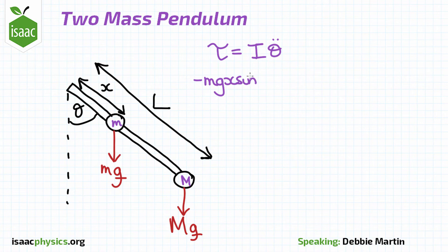The total torque is minus mgx sin theta minus Mg L sin theta. And our moment of inertia is mx squared plus ML squared since this is the sum of the moment of inertia of each point mass.